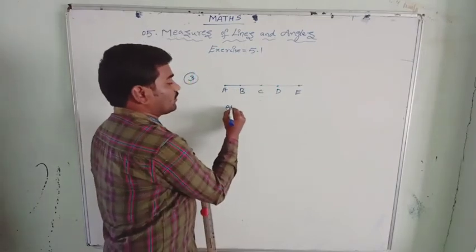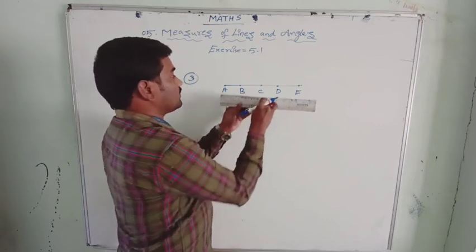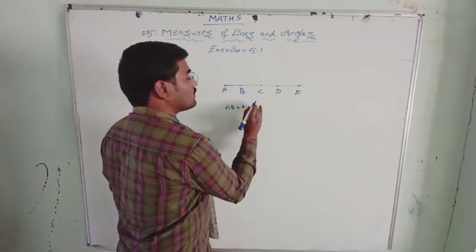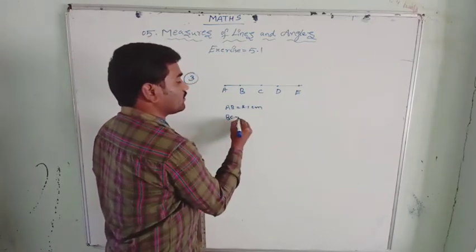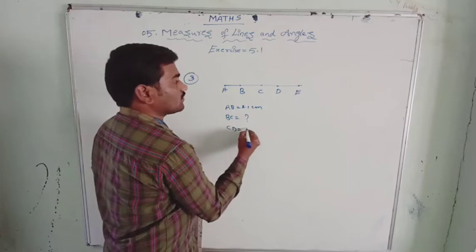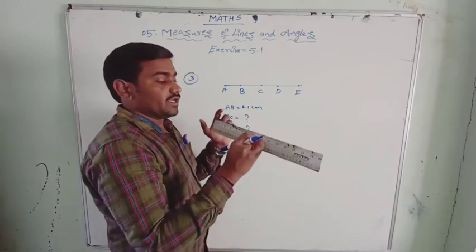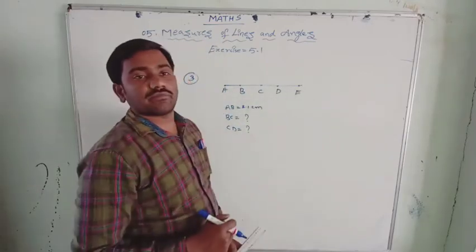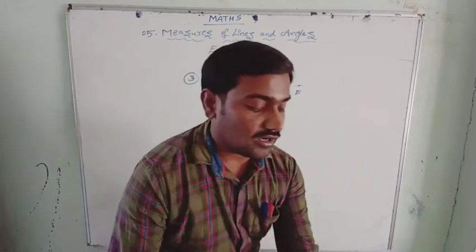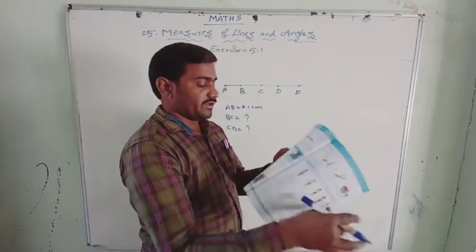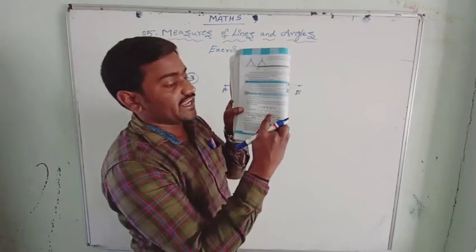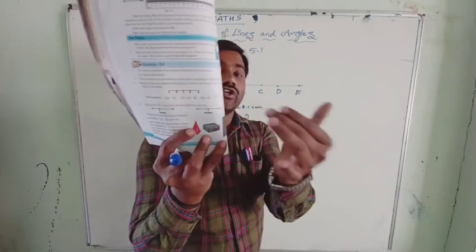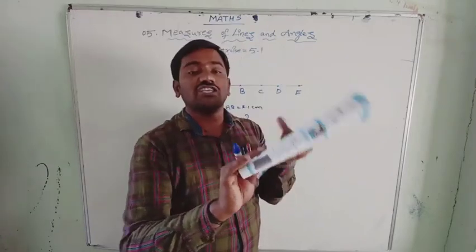What AB equal to how many centimeters you got here. I got 2.1 centimeter. Then, BC equal to what? And CD equal to how many centimeters. This is what you need to check. Take a ruler and measure the length of line segments. They will be giving you some, what you need to find. You need to find out AB, AC, AD, AE, BC, BD, and so on. Here they have given what you need to measure.